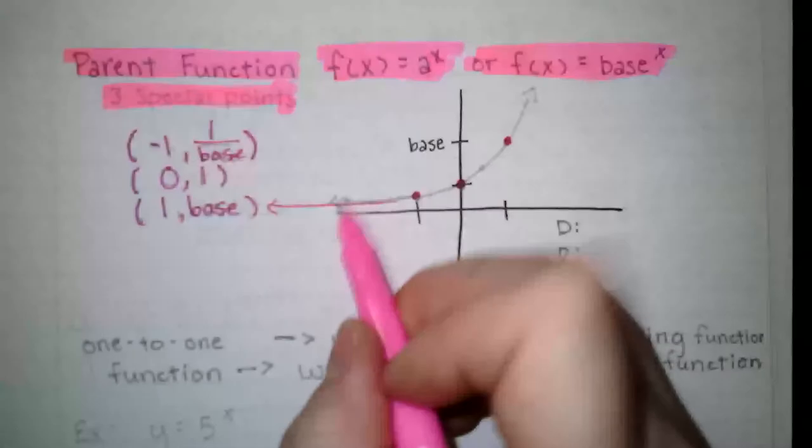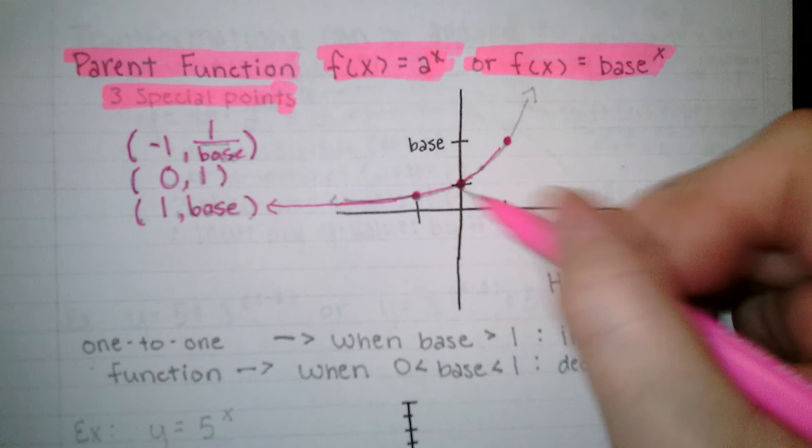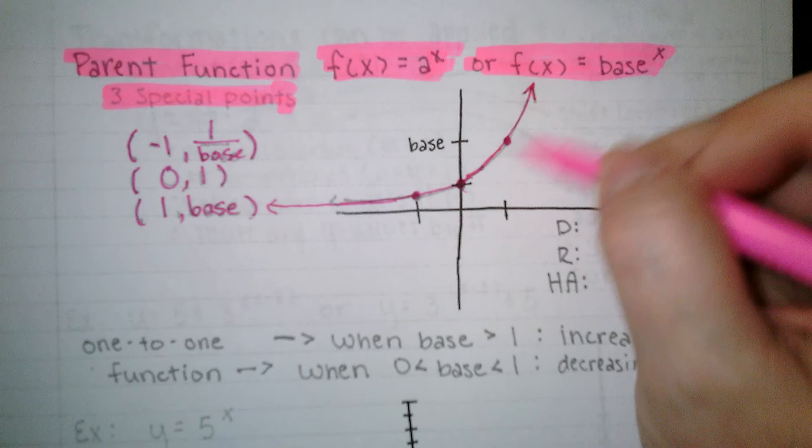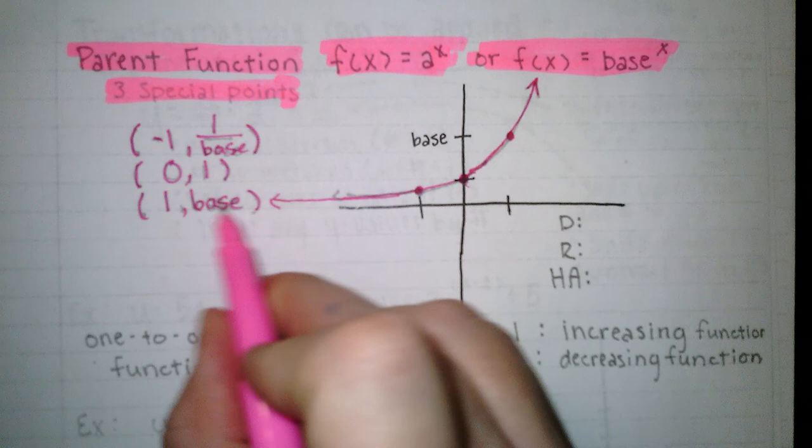So it never crosses this line of y equals 0 unless there's a transformation. But the parent function never crosses it. And then the higher the power gets, so I'll be like 2 to the 1st is 2, 2 squared is 4, 2 to the 3rd is 8, 2 to the 4th is 16. So it just grows very, very quickly. So the graph looks like this. It's going to run along this horizontal asymptote. Horizontal asymptote is at y equals 0. And then it's going to zoom away from the horizontal asymptote.